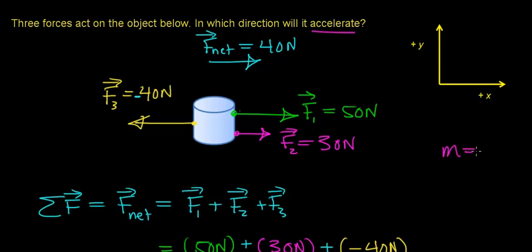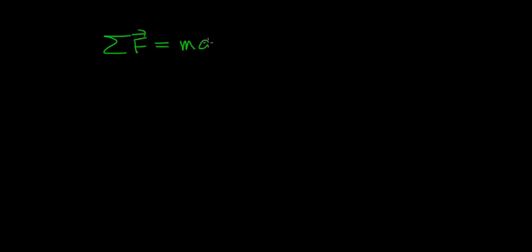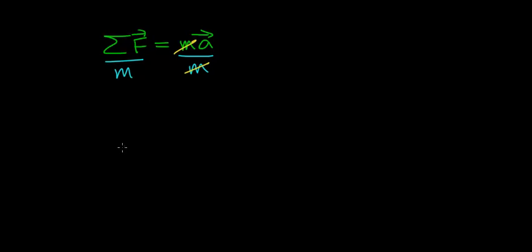Now suppose this object has a mass of 4 kilograms — we can figure out how fast it's going to accelerate. Looking at Newton's second law: the sum of all forces acting on an object equals the mass of the object times its acceleration. We've figured out the net force and we know the mass, so we just need to solve for the acceleration. We divide both sides of the equation by the mass term — what you do to one side you do to the other — and the mass terms cancel, giving us the acceleration as the sum of forces divided by the mass.